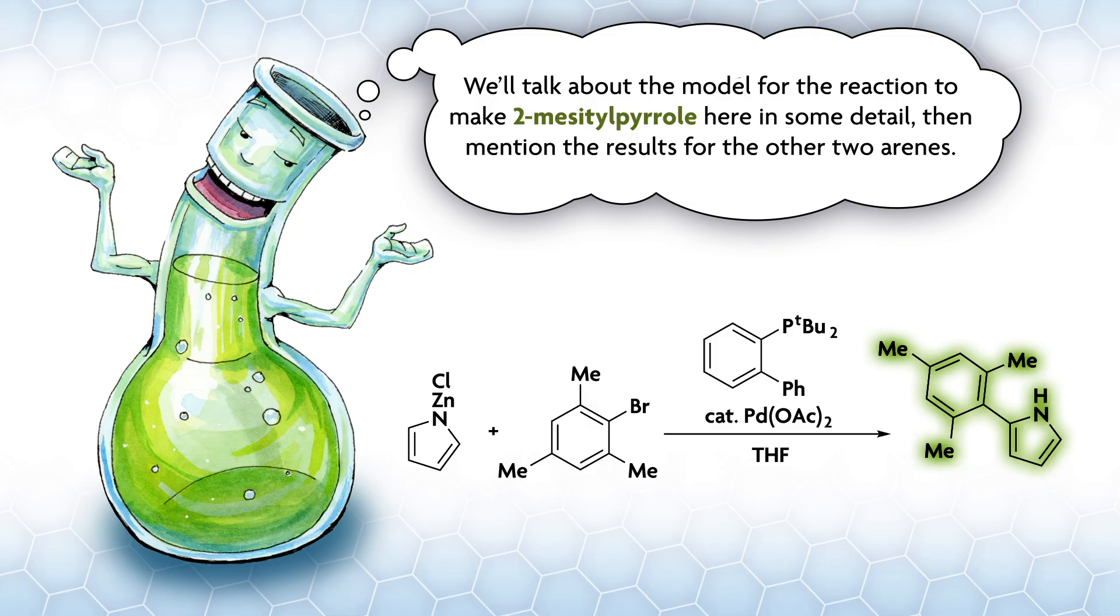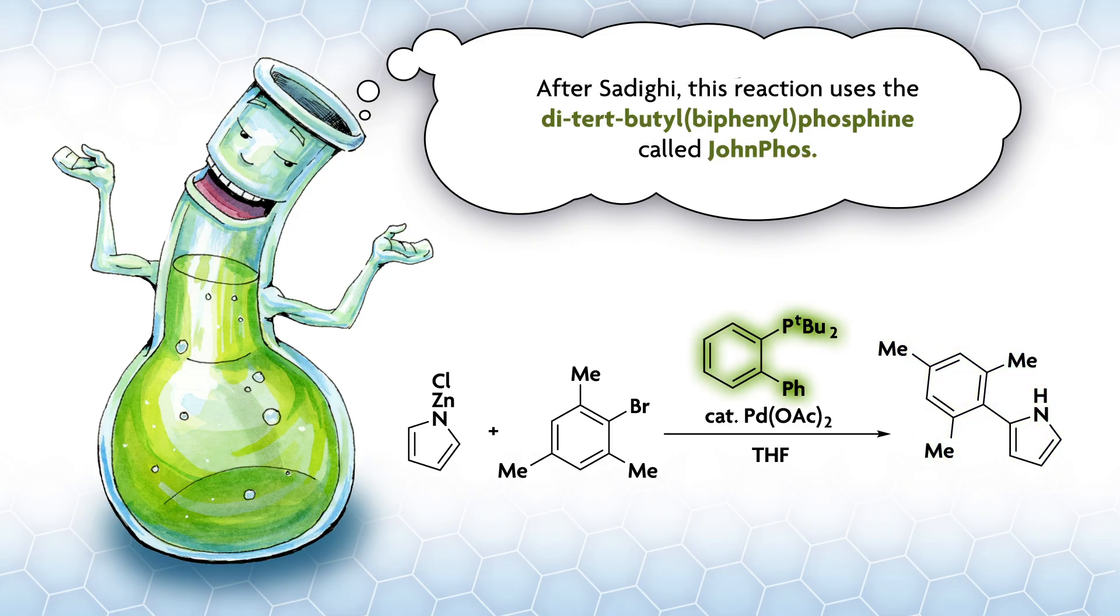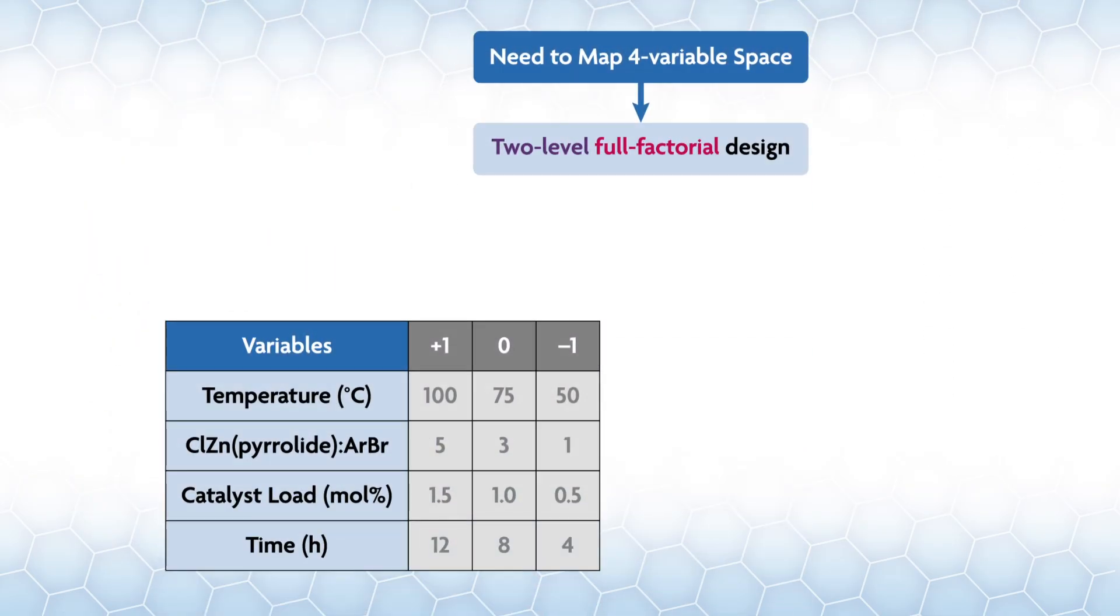We'll talk about the model for the reaction to make two-mezotyl-parole here in some detail, and then we'll mention the results for the other two errorings. Obviously, way more detail can be found in the paper, which is linked in the description. After Sadegi, this reaction uses di-tertbutyl biphenylphosphine, called JohnFoss. To map this four-variable space, he used a two-level full factorial design. For n variables, that's two to the n experiments, and here, two to the four equals 16 runs.